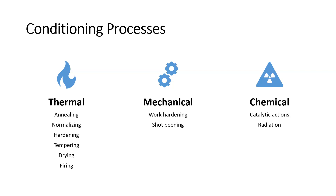We can break the conditioning processes down into three broad categories. We have thermal conditioning processes — this includes annealing, normalizing, hardening, tempering, drying, and firing. Then we have mechanical processes, such as work hardening or shot peening. We've already talked a little bit about mechanical conditioning processes, especially work hardening, when we looked at forming processes. And then the third subcategory is chemical processes, which include catalytic actions and radiation.